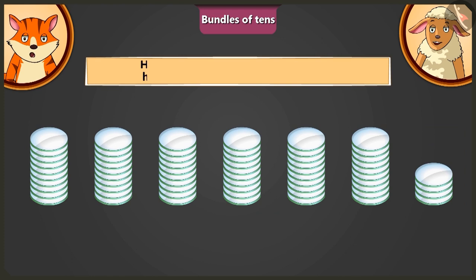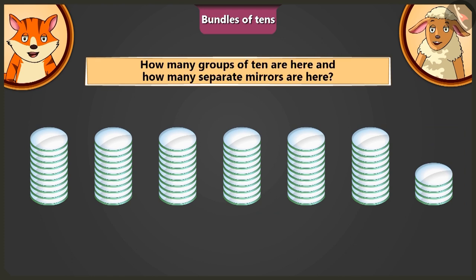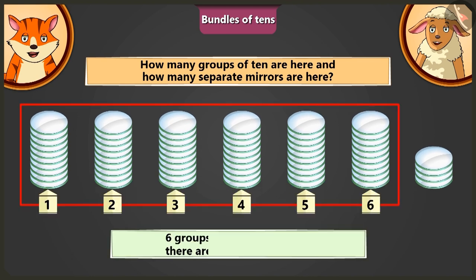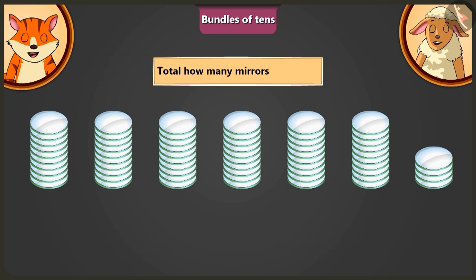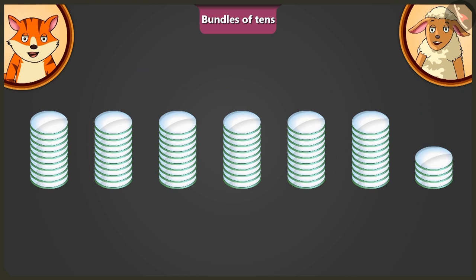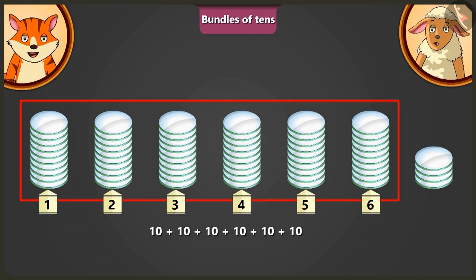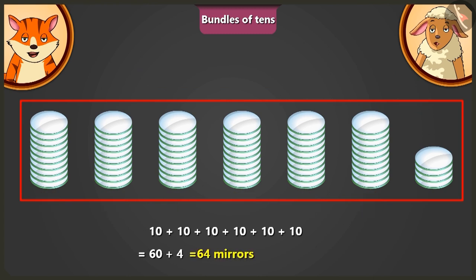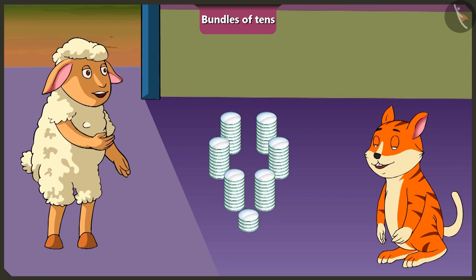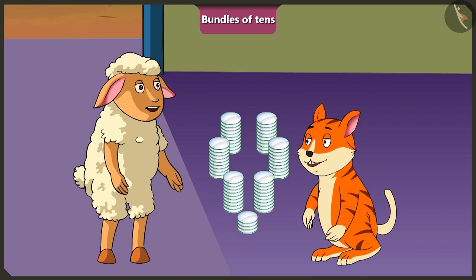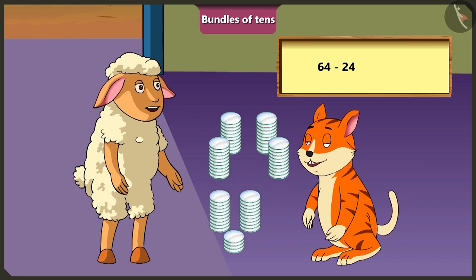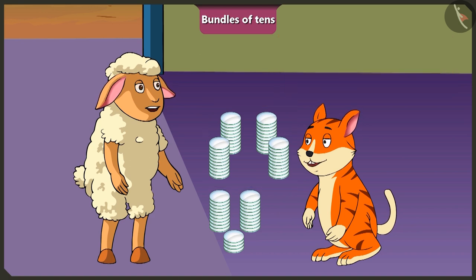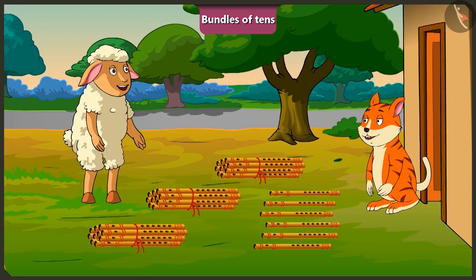Lily, how many groups of 10 are there in total and how many mirrors are there separately? There are 6 groups of 10 and 4 mirrors separately. So, how many mirrors are there in all? There are a total of 6 groups of 10, that means 60 and 4 — 64 mirrors. Wow, Lily, you counted so many mirrors very easily. Now I can give you 24 mirrors out of these 64 mirrors, so I will have 40 mirrors left. Thank you, Billy. Come on.